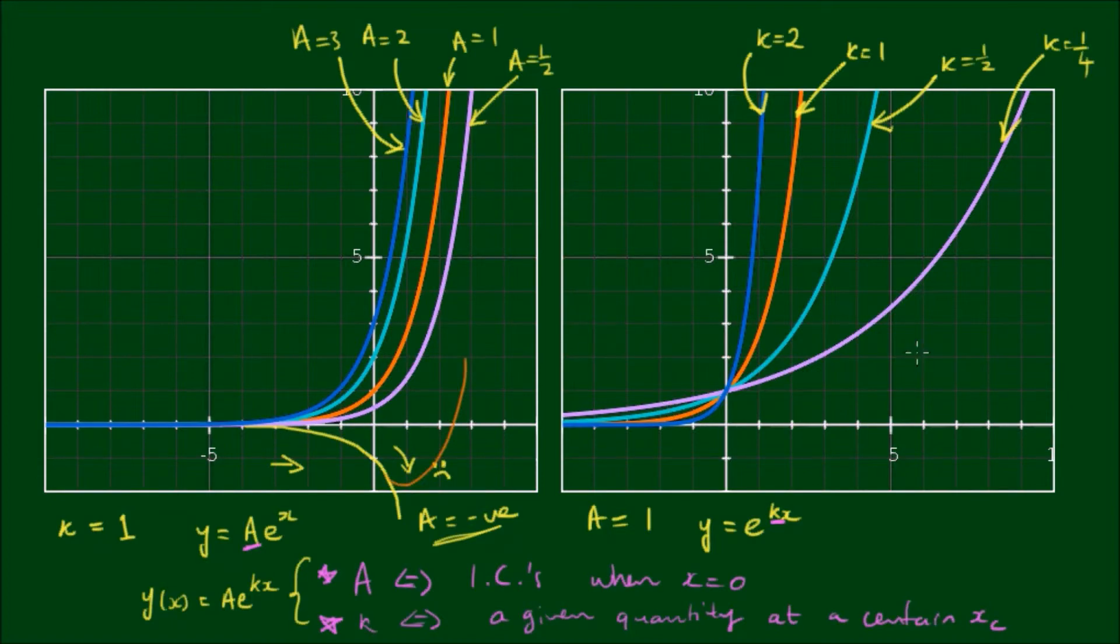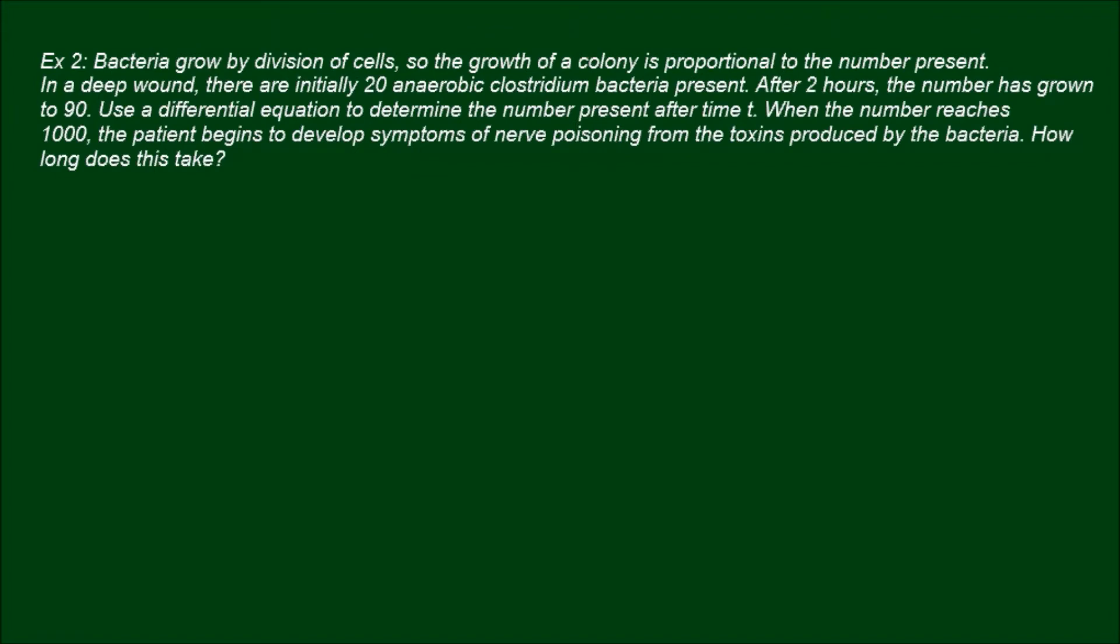Let's do another example. Bacteria grow by division of cells, so the growth of a colony is proportional to the number present. In a deep wound there are initially 20 anaerobic clostridium bacteria present. After two hours the number has grown to 90.